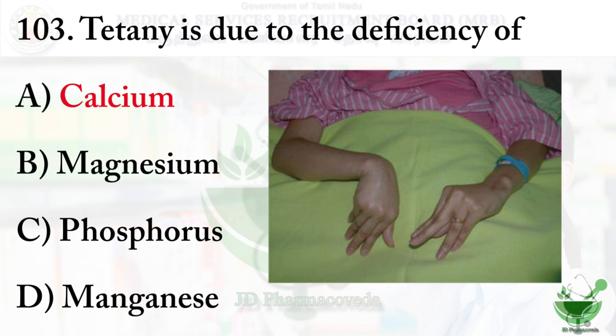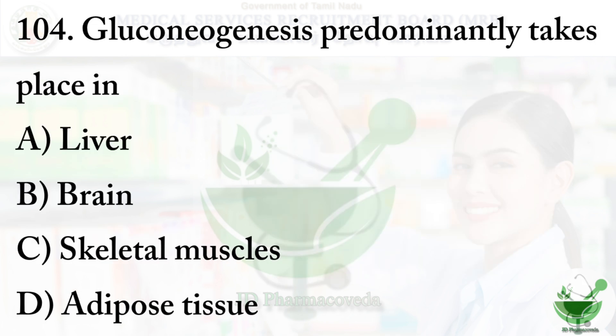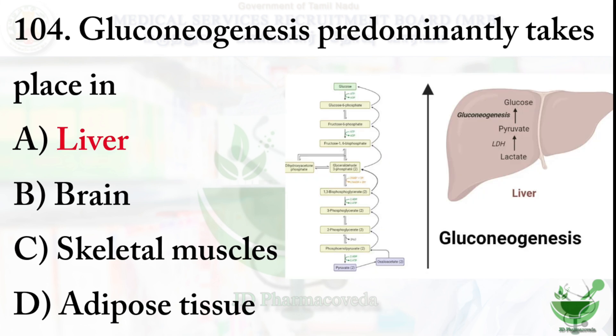Question number 104: Gluconeogenesis predominantly takes place in which organ? Gluconeogenesis means formation of glucose. Options: option A – Liver, option B – Brain, option C – Skeletal muscle, option D – Adipose tissue. The right option is option A – Liver. Most of the metabolism takes place in our liver.